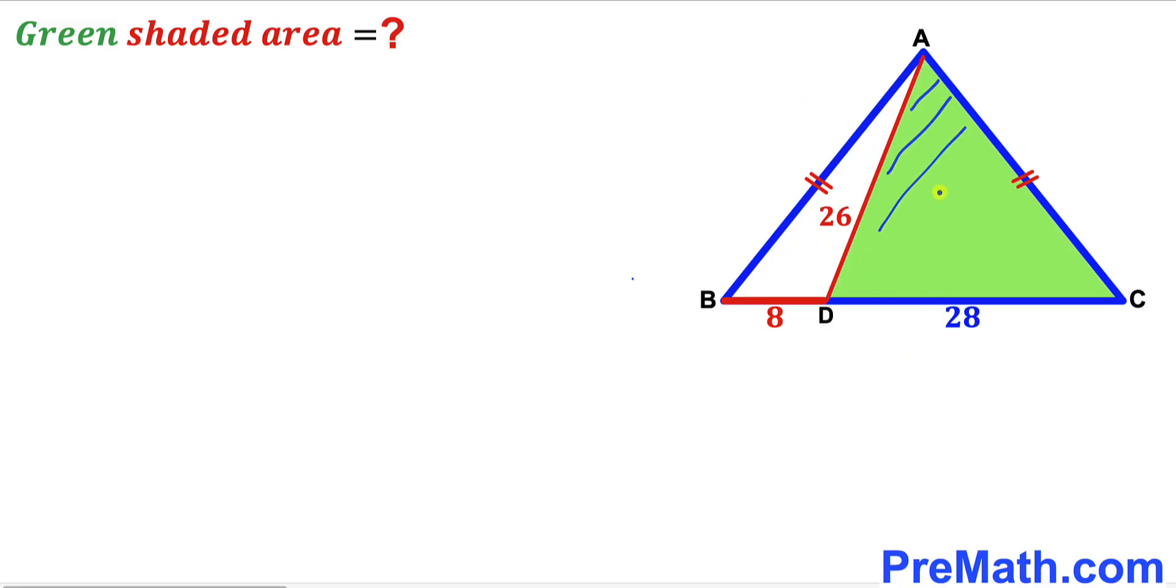Segment AD is 26 units, segment BD is 8 units, and segment DC is 28 units. Once again, side AB equals side AC. Our task is to calculate the area of this green shaded triangle ACD.